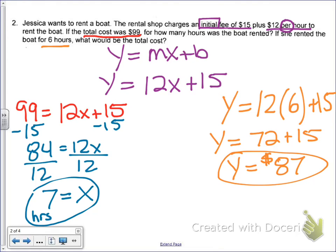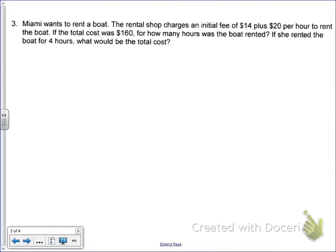All right, and the last one we're going to go over together is number 3. So number 3, Miami wants to rent a boat. So many people want to rent boats today. The rental shop charges an initial fee of $14 plus the $20 per hour. The word per is important to rent the boat. So in this case, my equation, again, we always start off with y equals mx plus b.